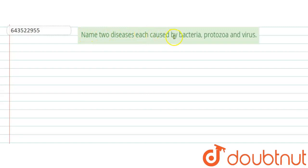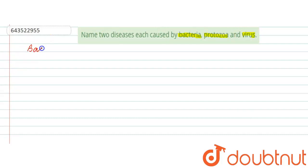Hello everyone. Here the question says: name two diseases each caused by bacteria, protozoa, and virus. So here we have to write two diseases caused by each of these — bacteria, protozoa, and virus.